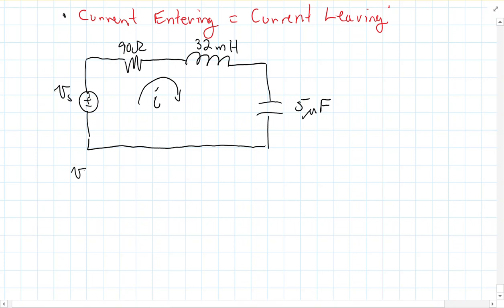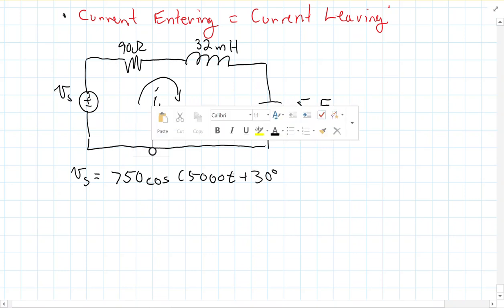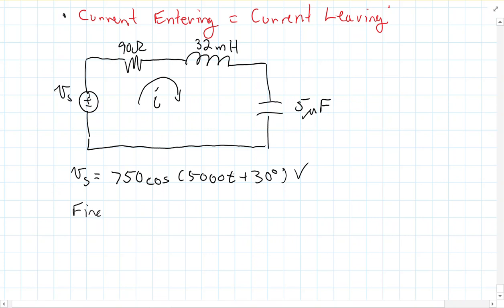And that VS here is given to us as 750 cosine of 5000 T plus 30 degrees volts. Alright. So, the goal of this problem here is to find the steady state current i.